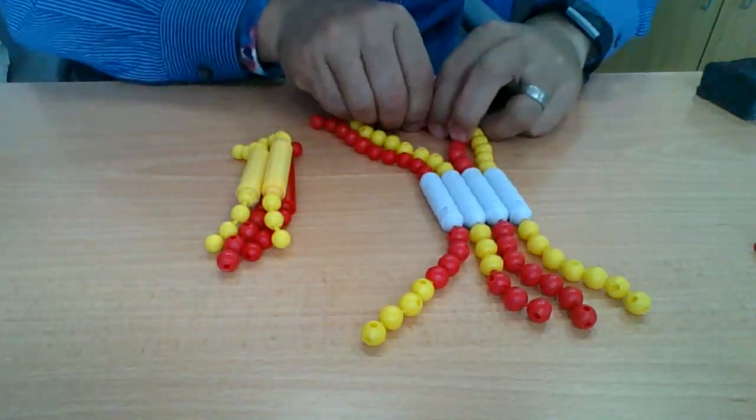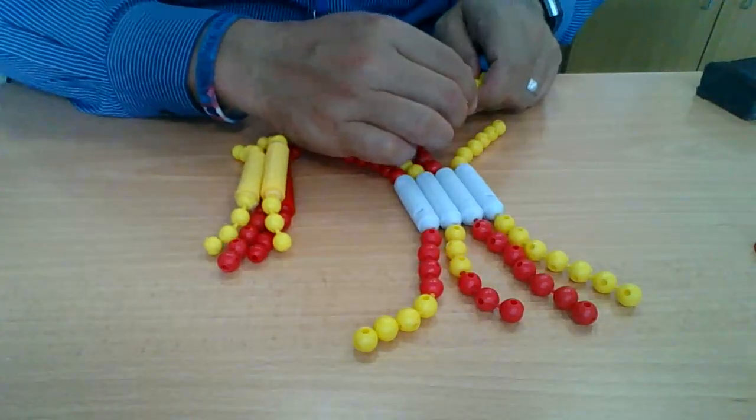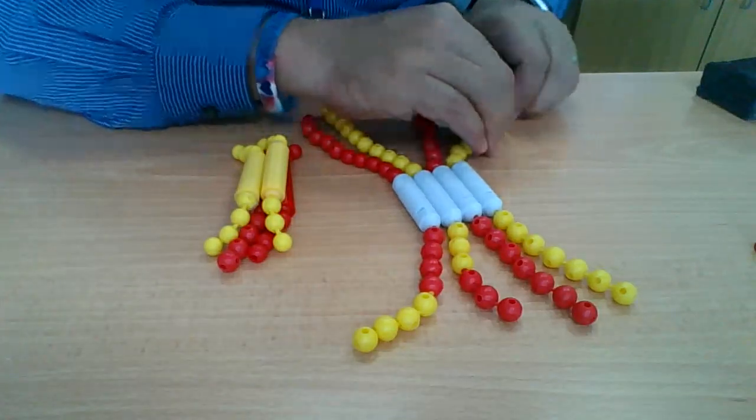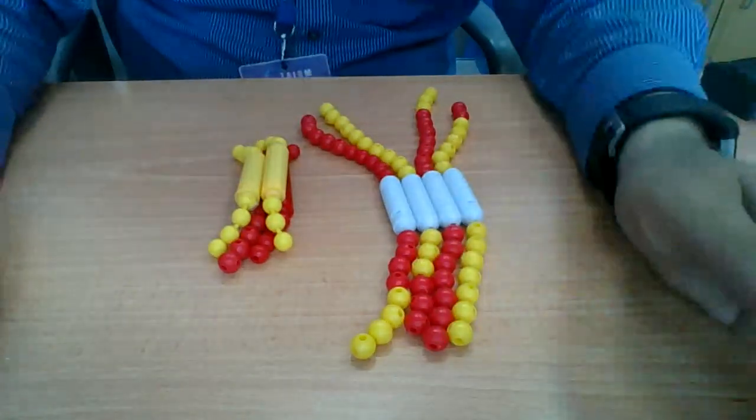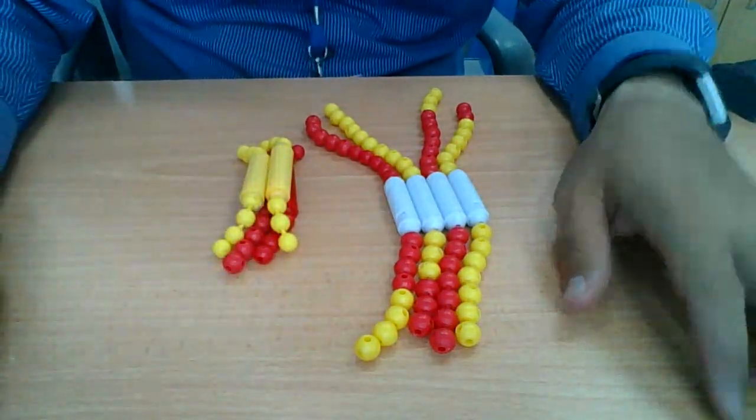A couple beads here, a couple beads here. In class, you got really creative, and a couple of you popped them in the middle, all over the place. They can go through different crossing over events. The closer genes are on a chromosome, the more likely they are to be inherited together. Those are called linked genes.